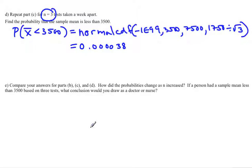You end up with a probability of 0.000038. That's an incredibly small probability. It would be very unlikely for you to do three tests a week apart each, find the sample mean of those three tests, and get a sample mean that's less than 3500.